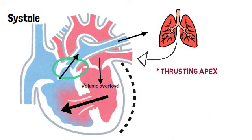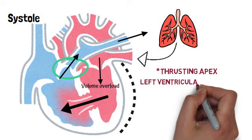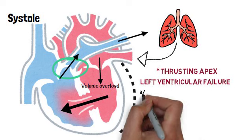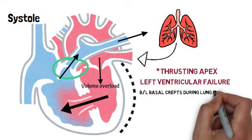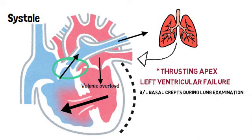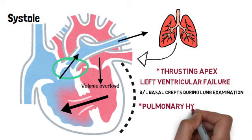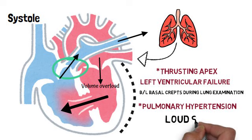Over time it can result in left ventricular failure, resulting in features like bilateral basal crepitations. And due to the volume overload to the pulmonary artery, pulmonary hypertension can also develop, resulting in a loud second heart sound.